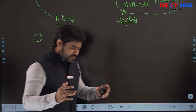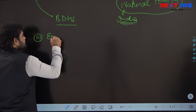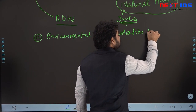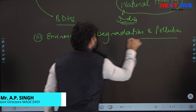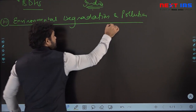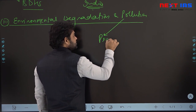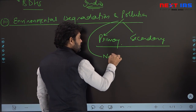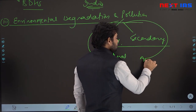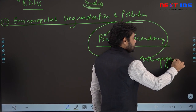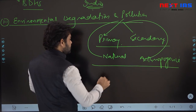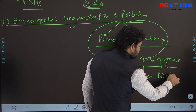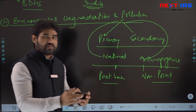The third area is environmental degradation and pollution. Here you need to focus on important facets including primary and secondary pollutants, natural and anthropogenic pollutants, and point source versus non-point source pollutants. Biodegradable and non-biodegradable pollutants are further subdivisions. These can be subsetted into air pollution, noise pollution, and water pollution.